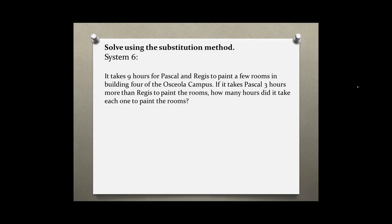Solve using the substitution method, System 6. It takes nine hours for Pascal and Regis to paint a few rooms in building four of the Osceola campus. If it takes Pascal three hours more than Regis to paint the rooms, how many hours did it take each one to paint the rooms?